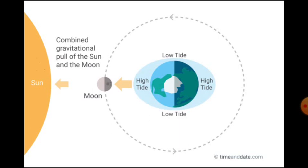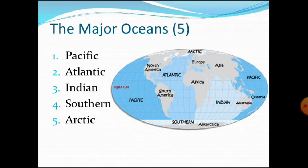Now we'll talk about major oceans. The five major oceans are the Pacific Ocean, the Atlantic Ocean, the Indian Ocean, the Southern Ocean, and the Arctic Ocean, in the order of their sizes.